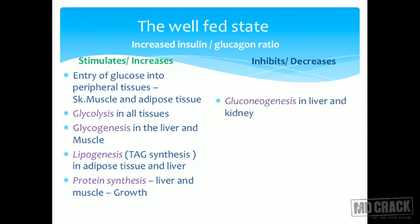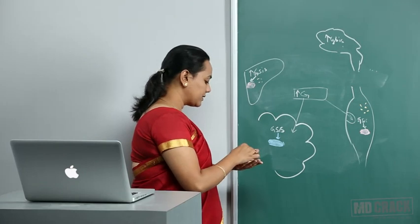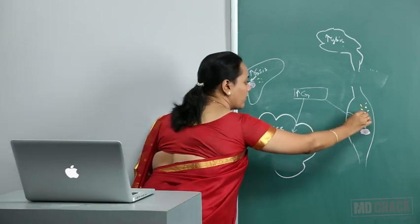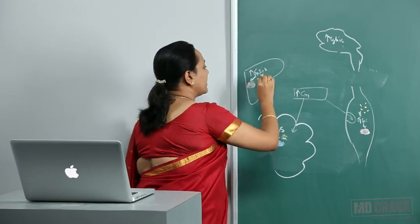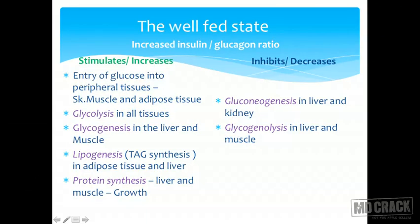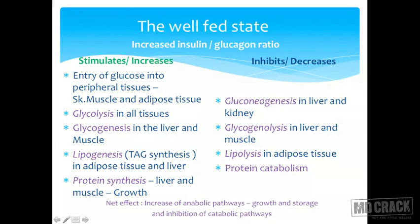In the well-fed state, gluconeogenesis is inhibited since extra glucose formation is not needed. Glycogenolysis in the liver and muscle is inhibited, lipolysis in the adipose tissue is inhibited, and protein catabolism is also inhibited. The net effect of high insulin is an increase in anabolic pathways — growth and storage — and inhibition of catabolic pathways.